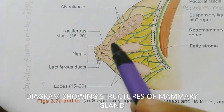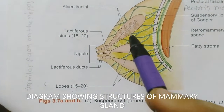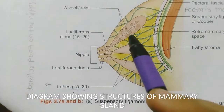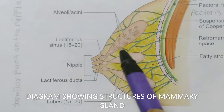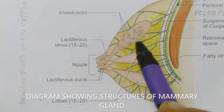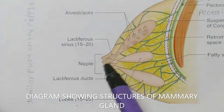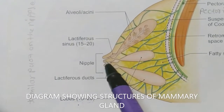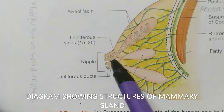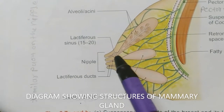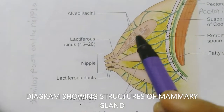The parenchyma is a tubulo-alveolar gland with 15 to 20 lobes. Each lobe contains a cluster of alveoli, and each lobe opens via one duct known as the lactiferous duct. Each duct has a dilatation known as the lactiferous sinus. This is the parenchyma of the mammary gland.